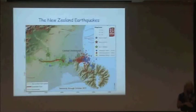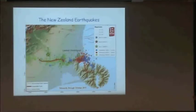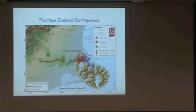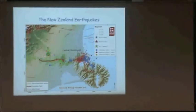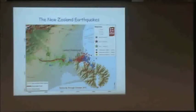Now the New Zealand earthquake. There was Chile, then New Zealand, then Japan. New Zealand was a relatively small earthquake — the first one was a magnitude 7. It happened west of Christchurch where they didn't expect it and didn't do much damage. But then they had a second earthquake right underneath the city of Christchurch, which ruptured a fault out there.